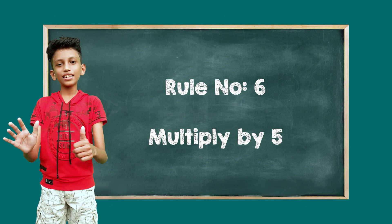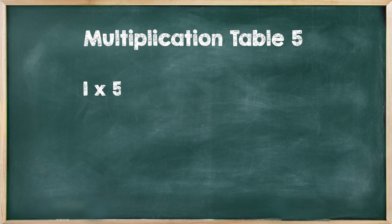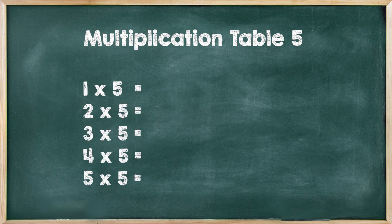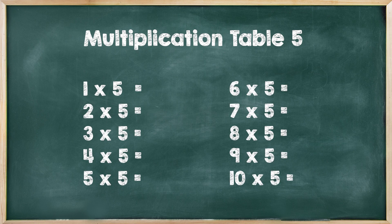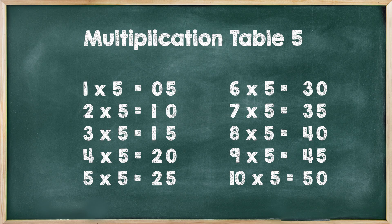Rule number 6: Multiplying by 5. This is an interesting rule. In the 5 times table, the answer in the unit place should be 5 or 0. And in the tens place, first we add 0, then 2 times 1, 2 times 2, 2 times 3 — like that, it will go on.